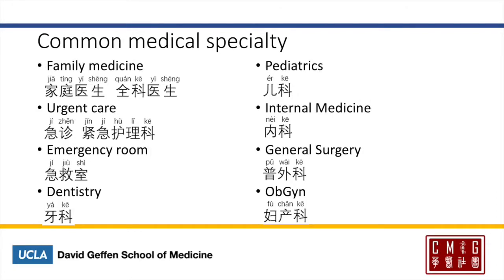Here is a list of medical specialties. Family medicine is 家庭医生 or 全科医生 — 全科 meaning general, all the specialties. Urgent care is 急診 or 緊急护理科. Emergency room will be 急救室 — 救 meaning to rescue, to resuscitate. So it's slightly different from 急診, which only means an urgent clinic.